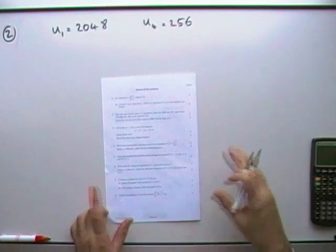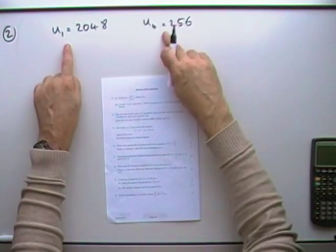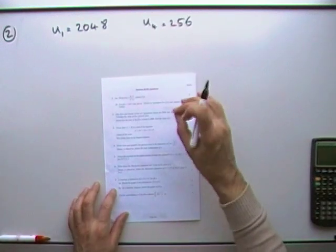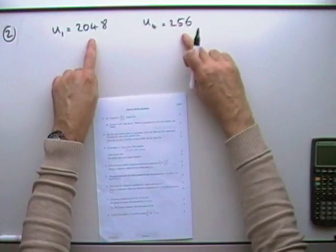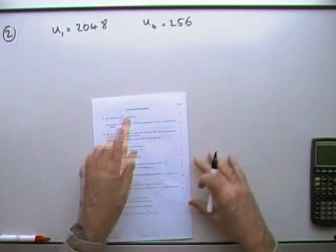So for question two, geometric series. This is the first and the fourth terms. They're getting smaller, so the common multiplying ratio must be a proper fraction. You can also see these are powers of two, if you know them.